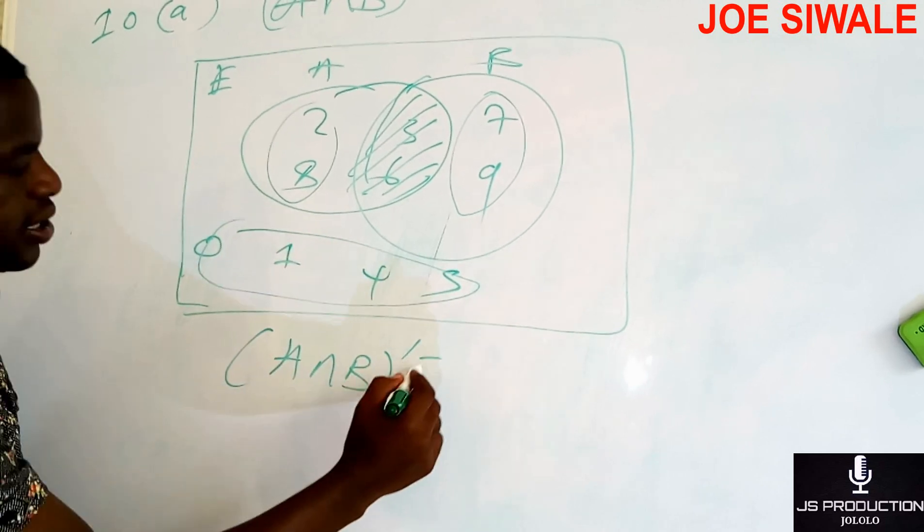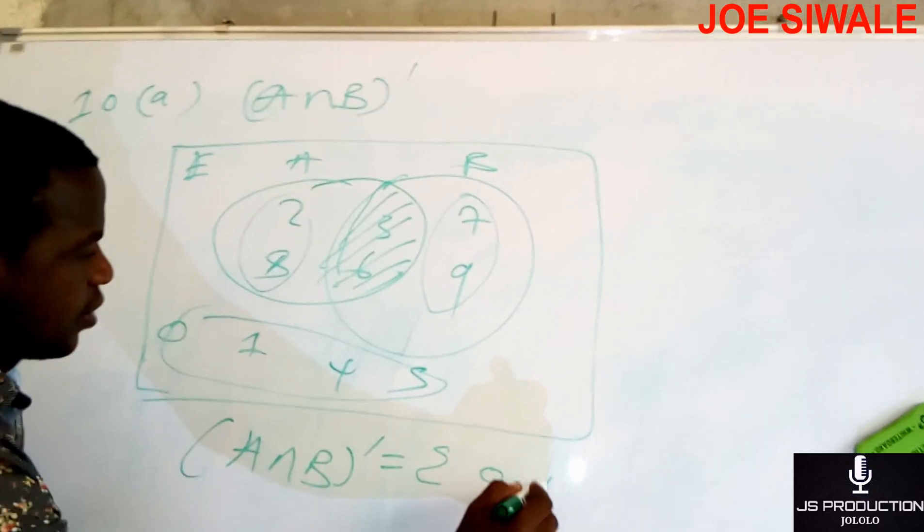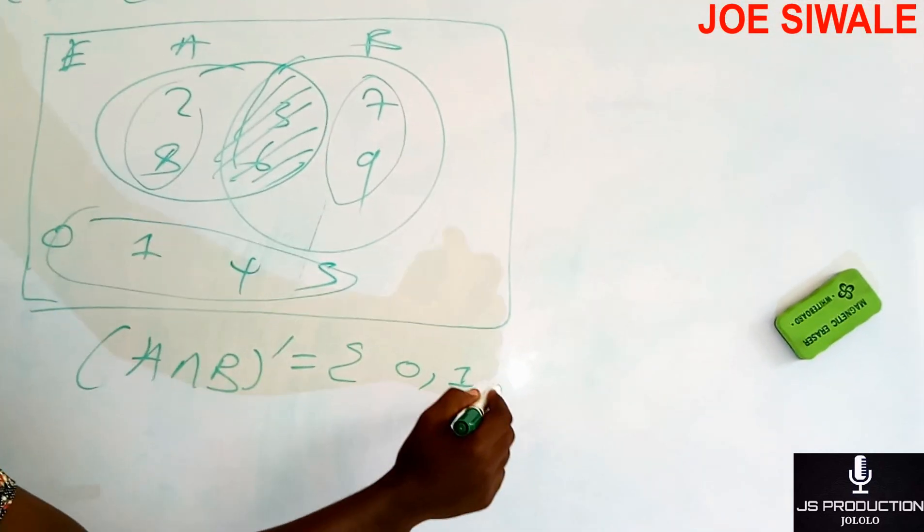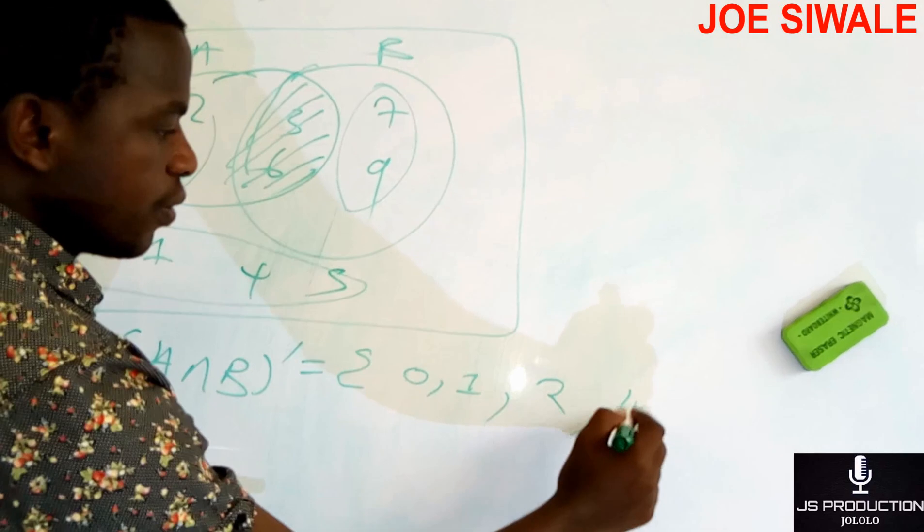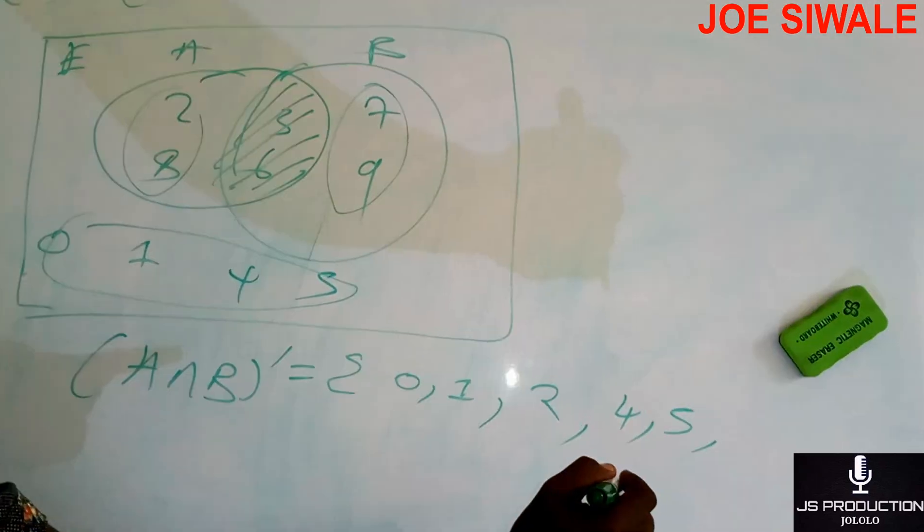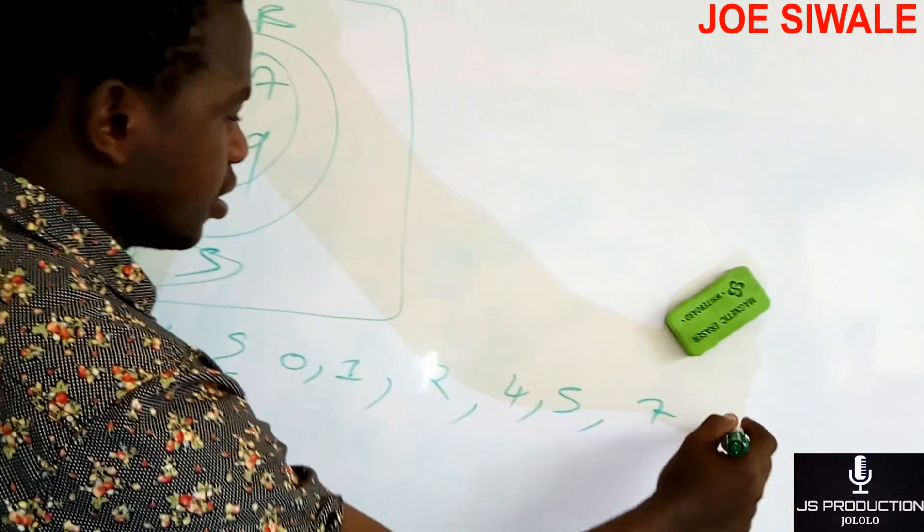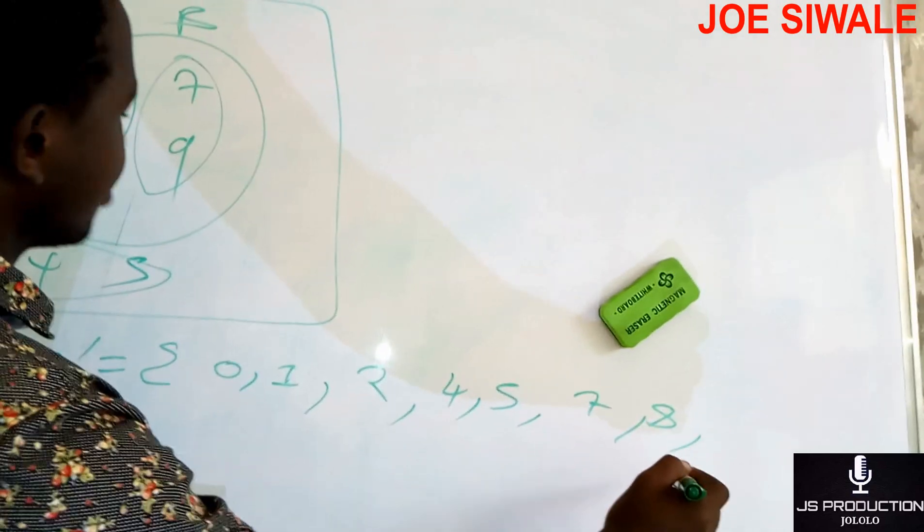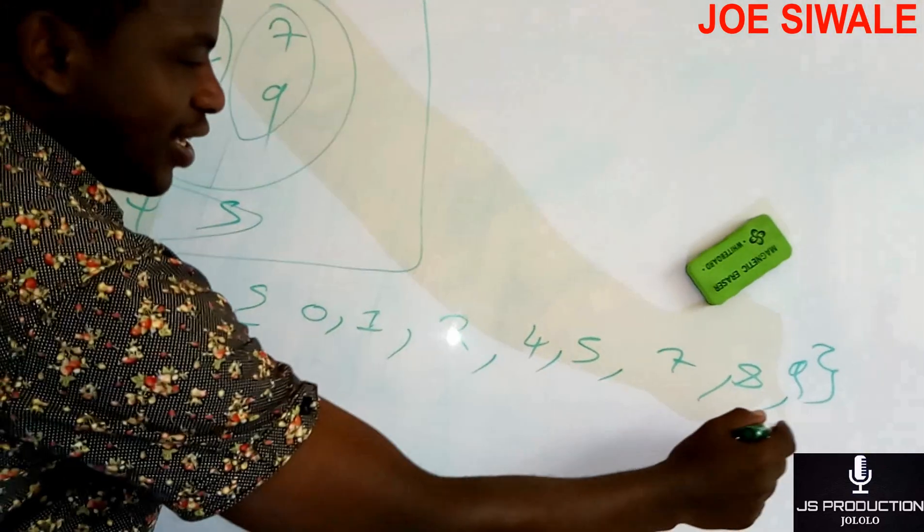So this is 0, 1, 2, 4, 5, 7, 8, 9. So this is my answer.